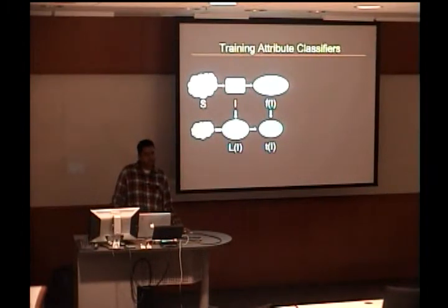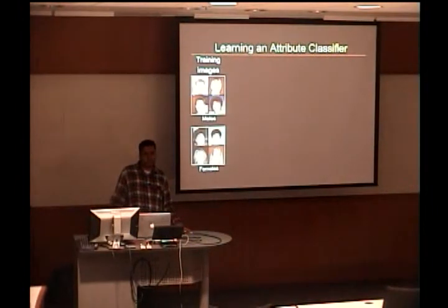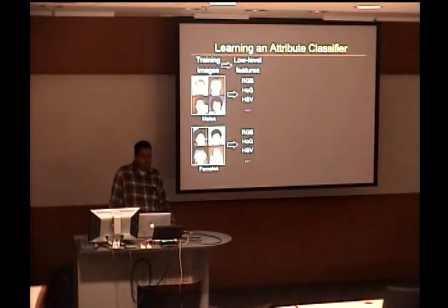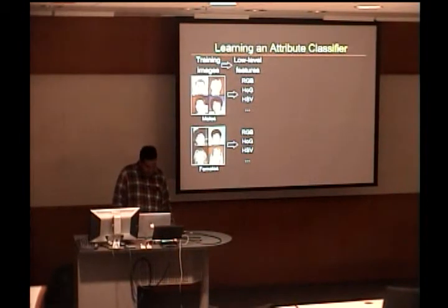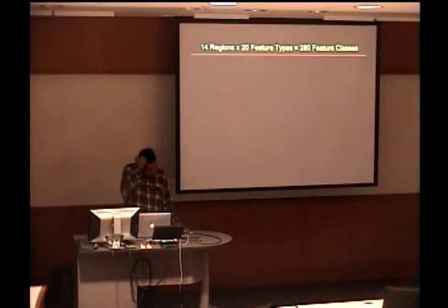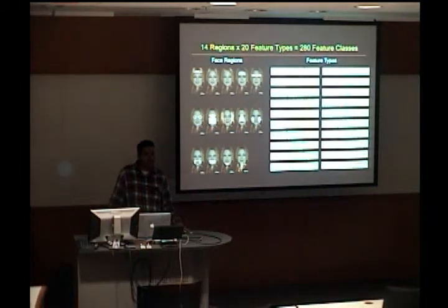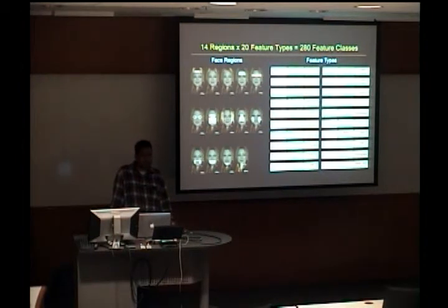Now we have images that are labeled, so let's see how we actually train an attribute classifier. Let's look at a specific example of gender. Here we have some images of males and some images of females. We're going to extract a number of low-level features, and we divide up the problem into regions on the face. We have 14 different regions corresponding to things like the eyes, the mouth, the forehead, the chin, and so on.